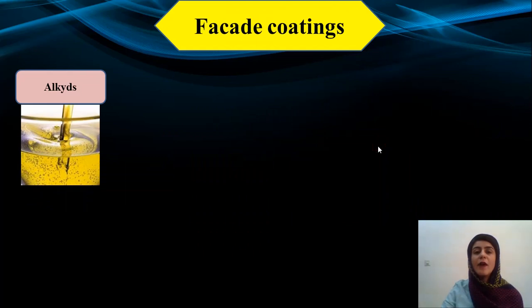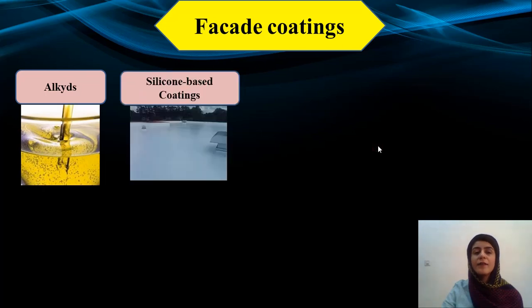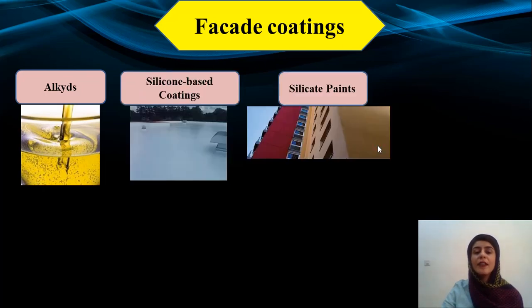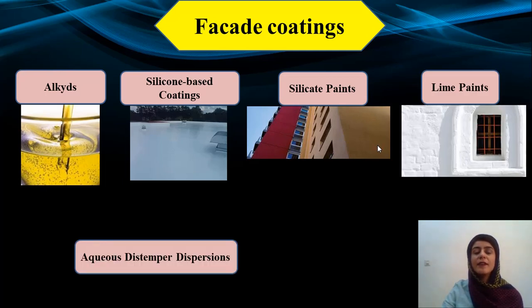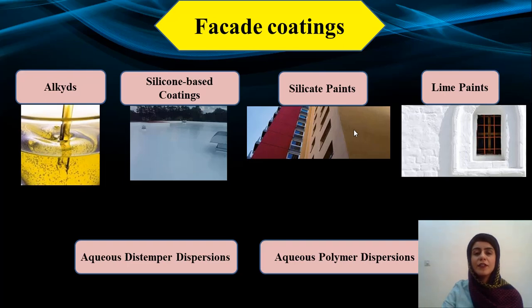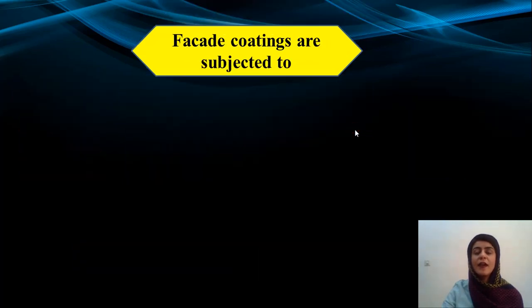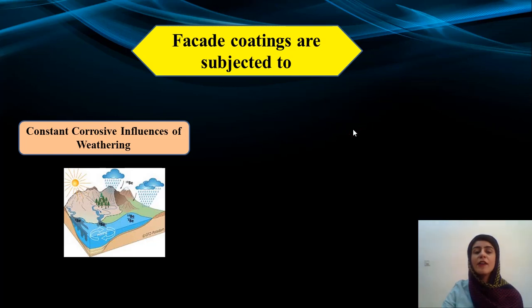There are different types of façade coatings and each of them has its own properties and it can be used in different types of materials. Some types of façade coatings include alkyd paints, silicone-based coatings, silicate paints, lime paints, aqueous distemper dispersions, and aqueous polymer dispersions.